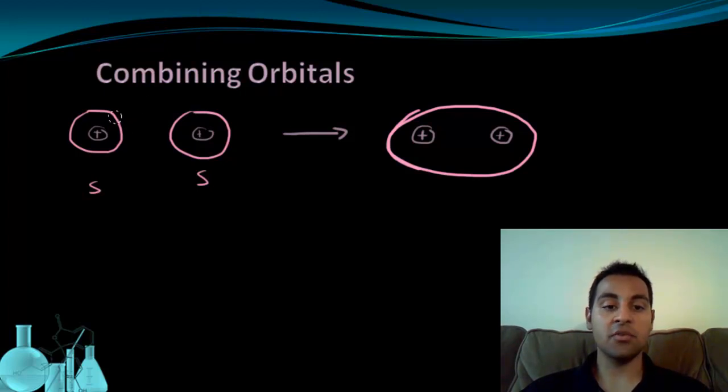This new region represents the molecular orbital where you can now find the shared pair of electrons. And you can see it's almost as if one of these sort of extended towards the other, and they filled in, and now we have this region here where you can find electrons.